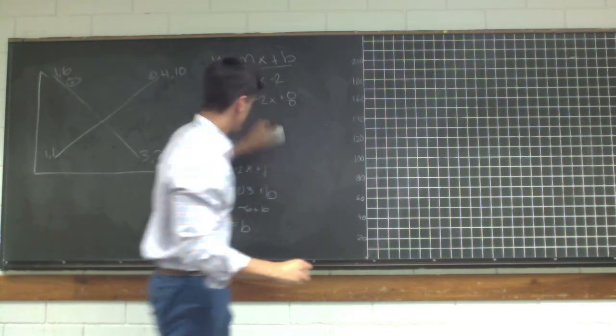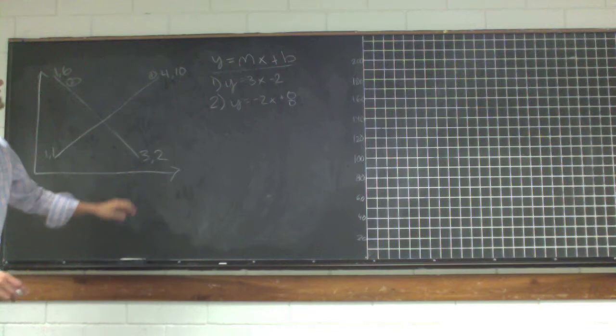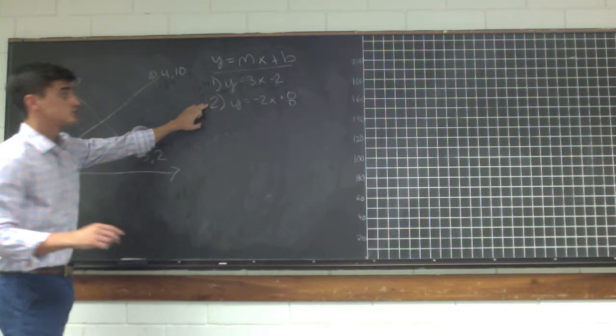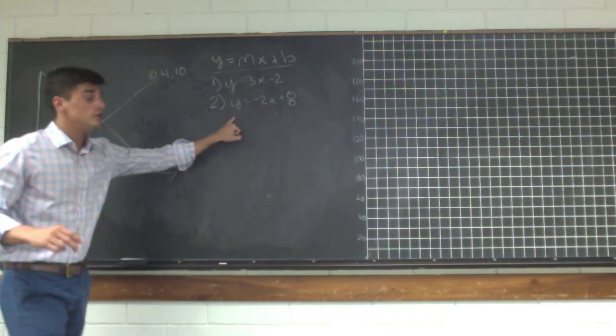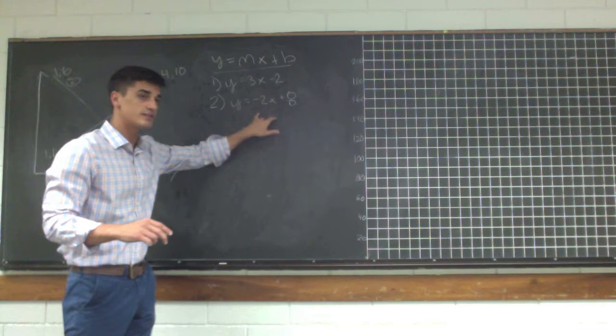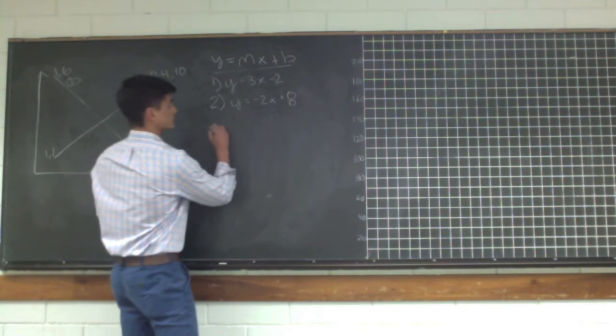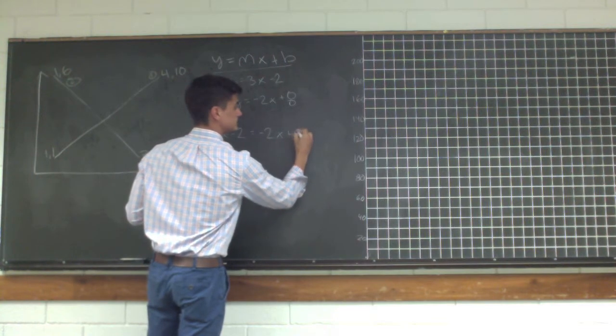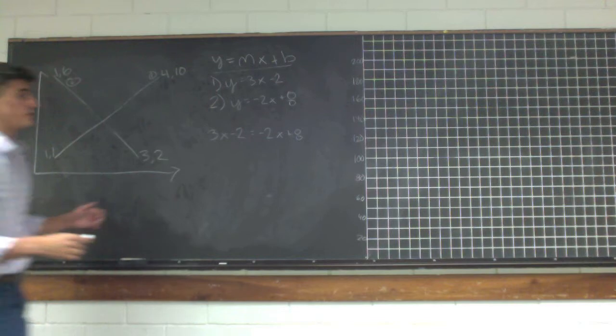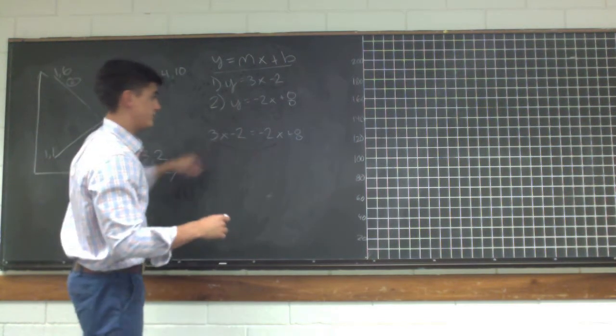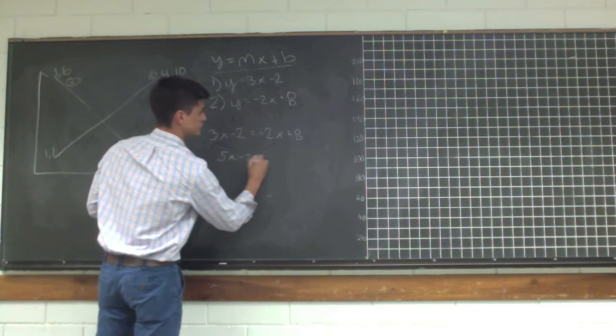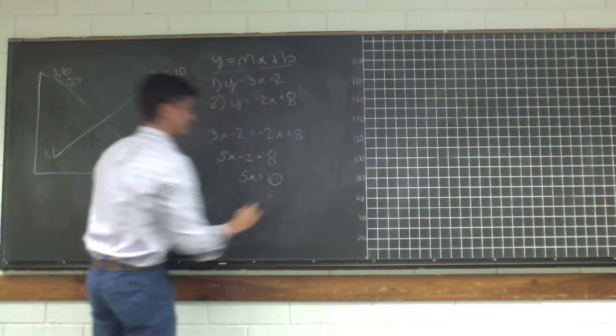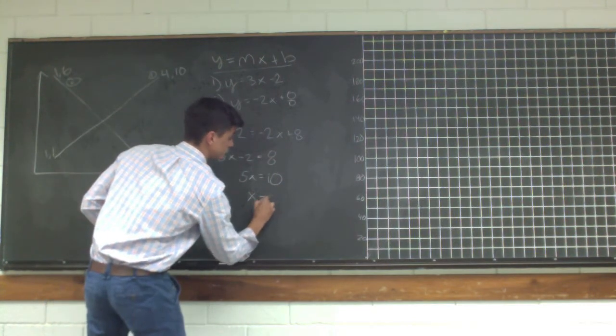Now this is where we can start to find the intercept right here. So now we know that for equation 1, 3x minus 2 equals y. And we know that for line number 2, negative 2x plus 8 equals y. So both of these equations are equal to y. Can't we set these two equations equal to each other? Yes, exactly. So now let's do 3x minus 2 equals negative 2x plus 8. Now who can do the algebra for this one? Solve it out. What do we do with this 2x? Add it to the other side. So we're going to add 2x. So this is 5x minus 2 equals 8. What do we do with this 2? Add 2 to the other side. 5x equals 10. How do we get this x by itself? Divide by 5. So we get x equals 2. Good job.